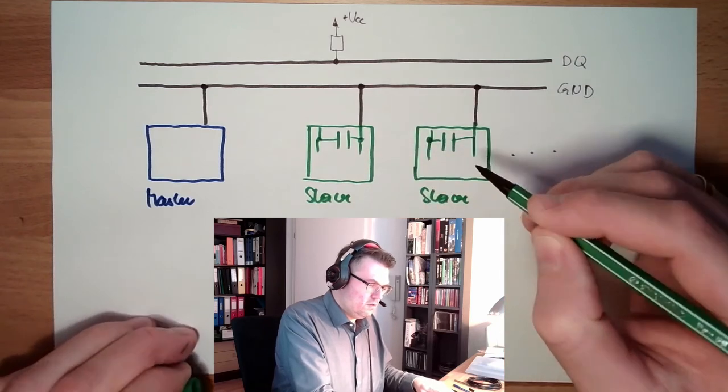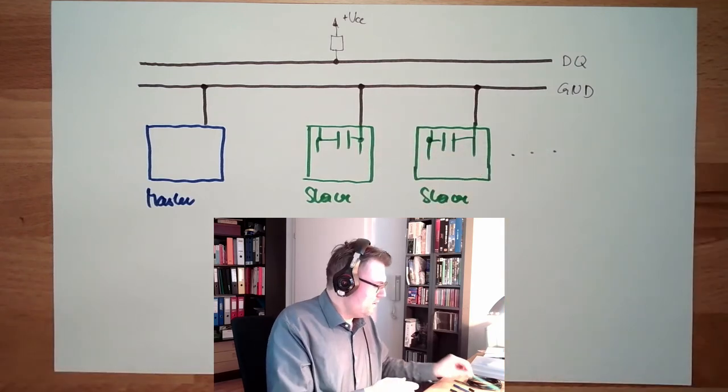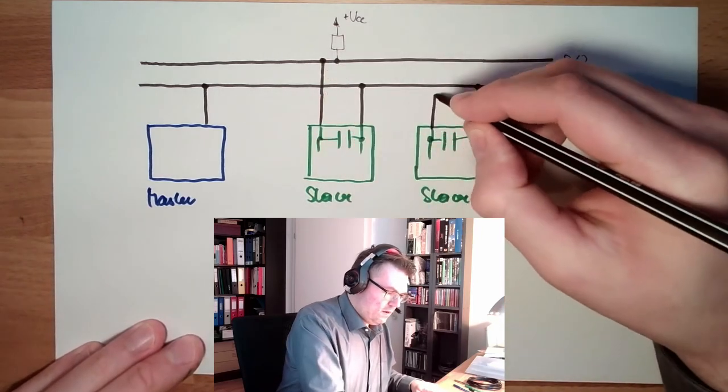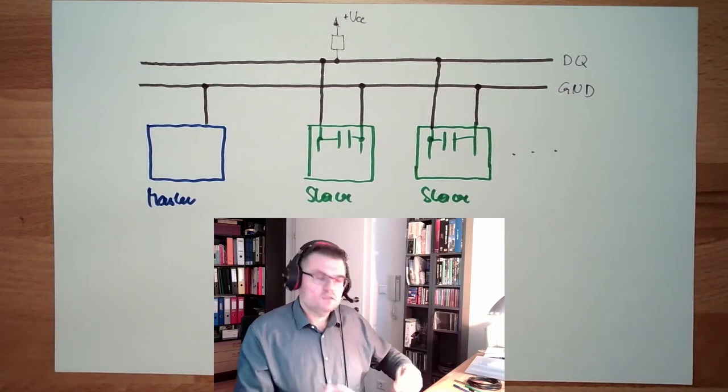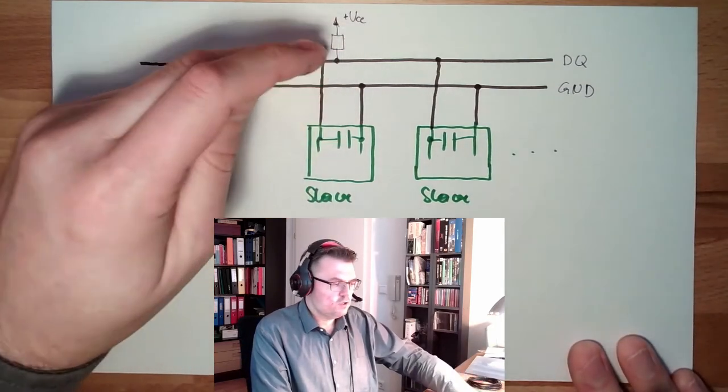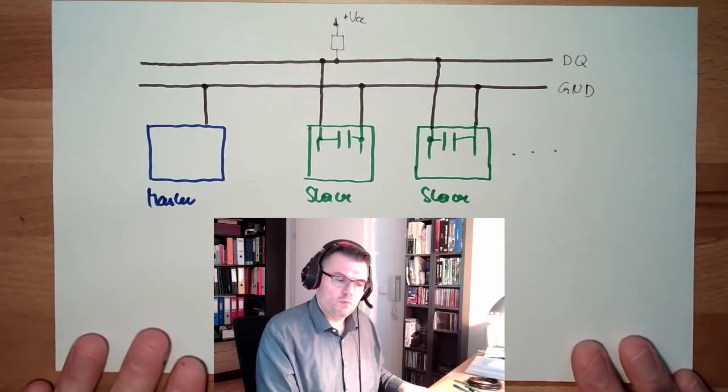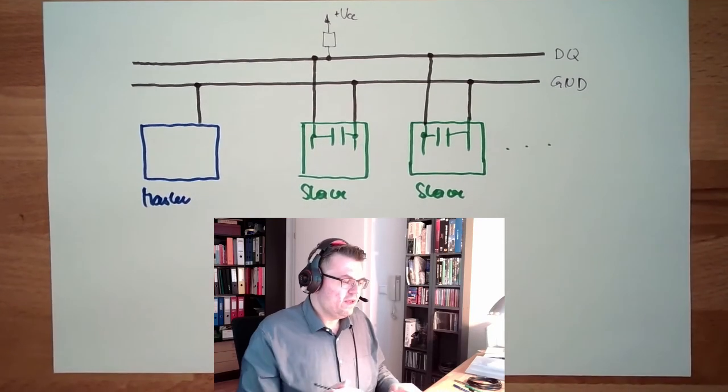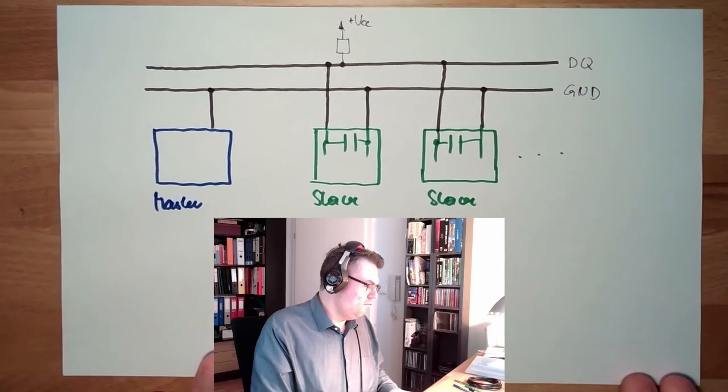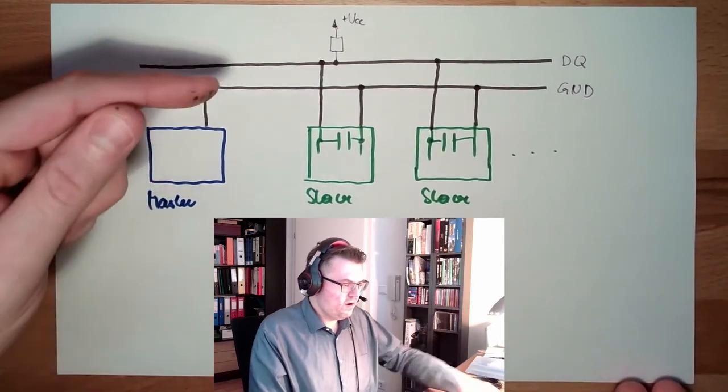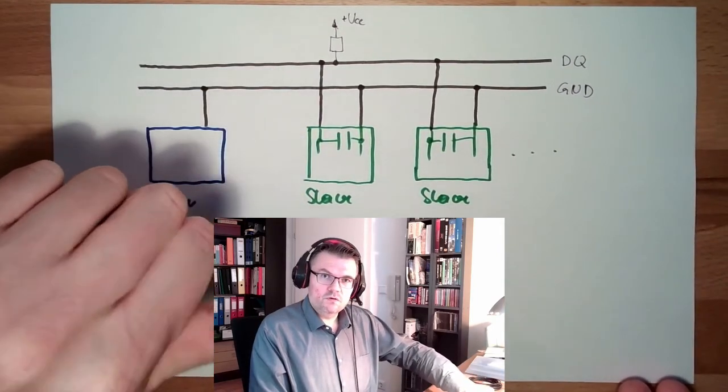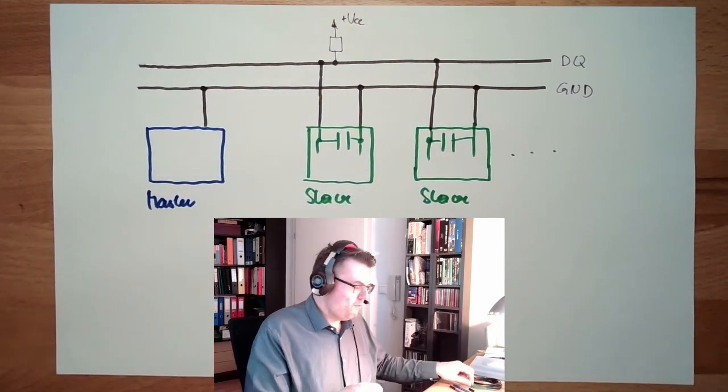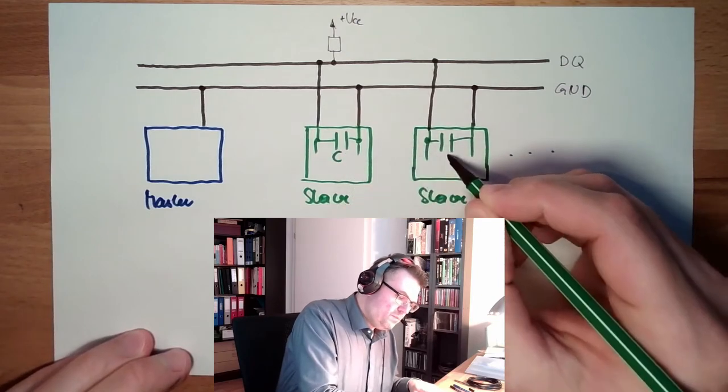Built-in capacitor. And the logic, this is inside. And they are connected then to the data line. So once nobody is talking, the data line is charged to this supply voltage. And the capacitors are charged too. And if there is some data transfer, this will go to zero for a certain amount of time. And the power supply for the slave is done by these capacitors here. But it's built-in capacitors.